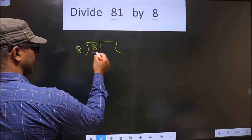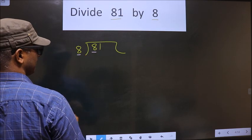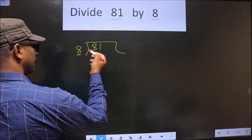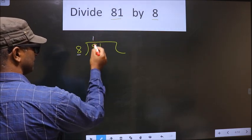Here we have 8 and here also we have 8. When do we get 8 in 8 table? 8 once 8.